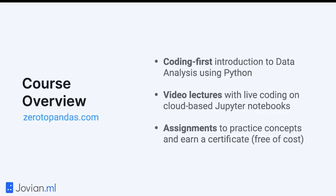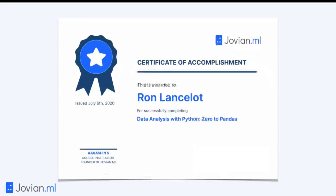Here's a quick overview of the course. Zero to Pandas is a coding-first introduction to data analysis using Python. We will talk about data analysis, write code, and through code learn whatever mathematical concepts we need. All material will be available so you can try it out. You'll also get assignments to practice these concepts, and if you complete all the assignments and exercises, you will earn a certificate of accomplishment offered by jovian.ml.